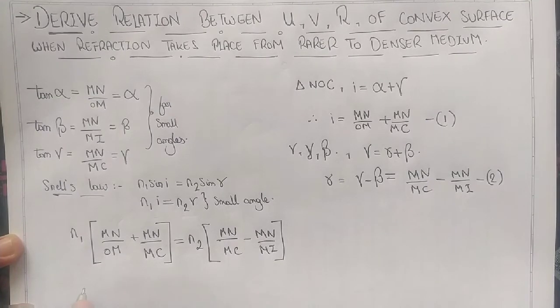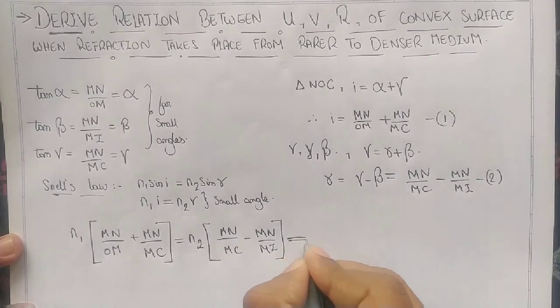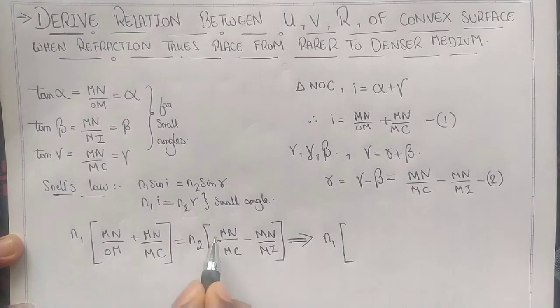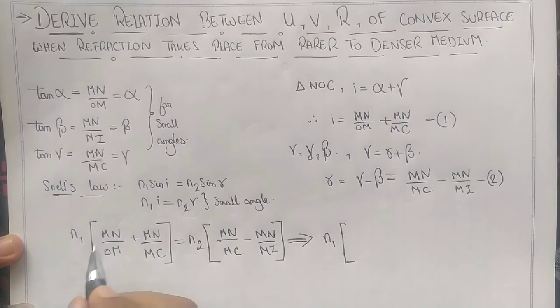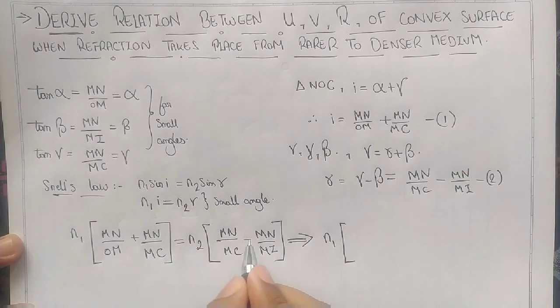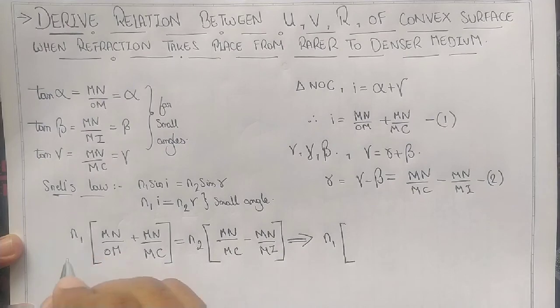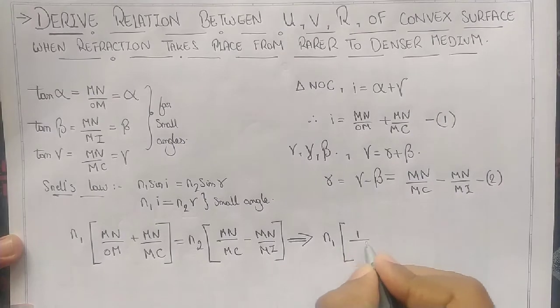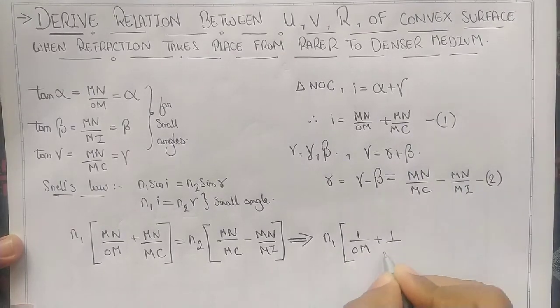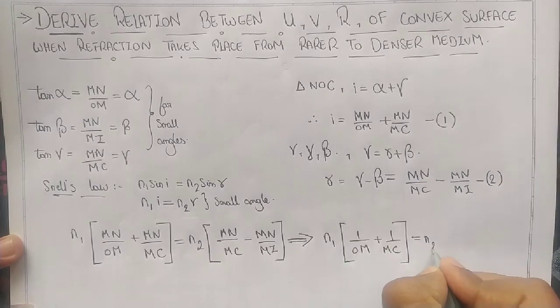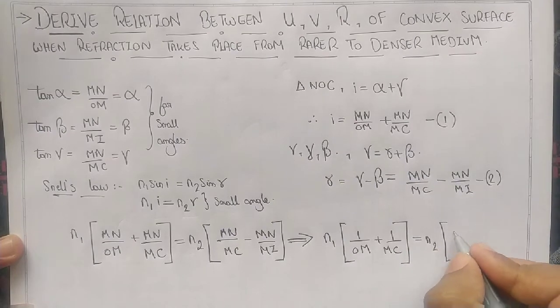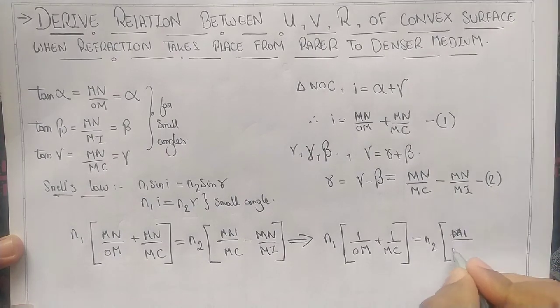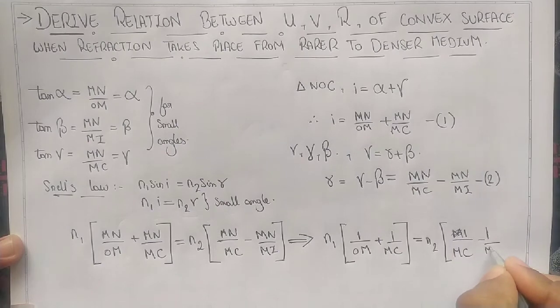Now we are almost 50% done with this particular derivation. The only thing is mathematics - substitute the value I from equation 1 and value R in Snell's law. N1 into I, which is MN by OM plus MN divided by MC, equals N2 into R, which is MN by MC minus MN by MI.